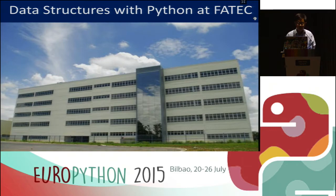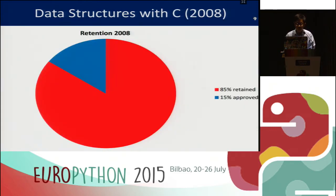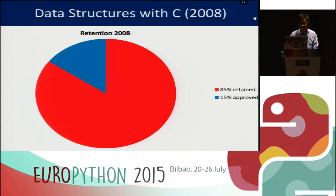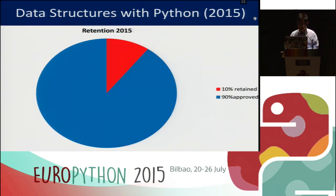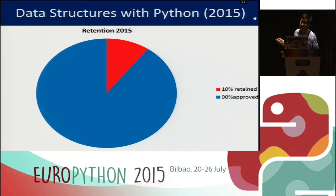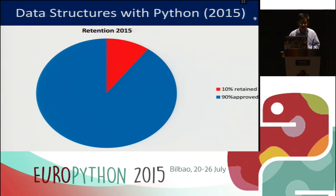Data structures at my university, Fatech — 2008 was a bad year for me because we had a high number of students retained. But with Python, in that year only 10% were retained — we had an improvement with the change from C language to Python. In this talk I will show the improvements with some code.